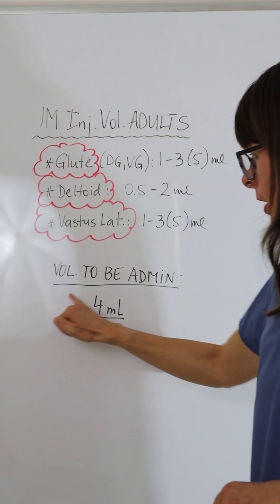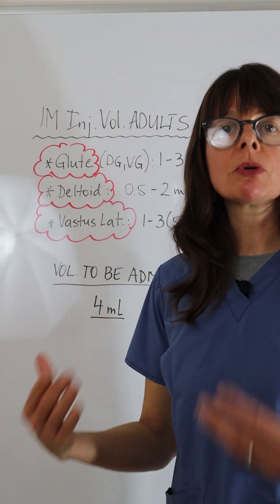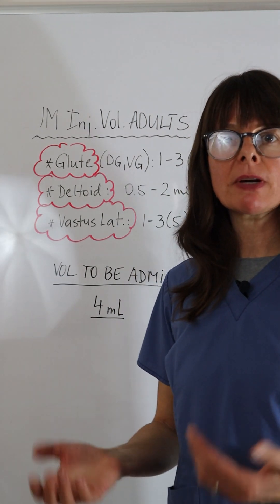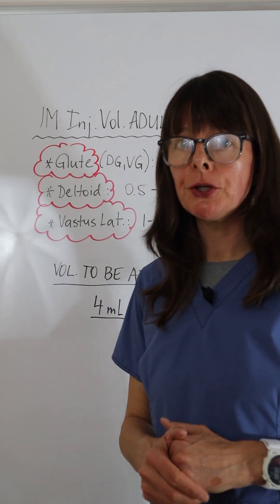if we had a volume to be administered of four milliliters and the patient was a normal size patient, so not extra muscular, but also not very frail with low muscle mass, what can you do?